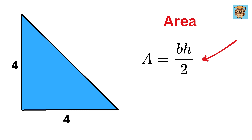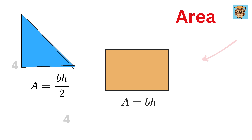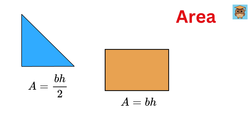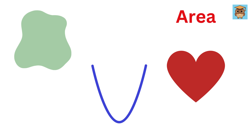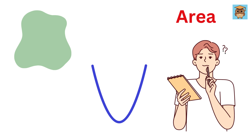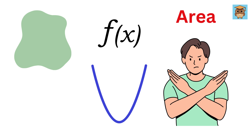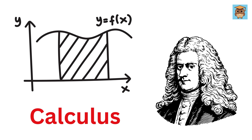Now, this simple formula is possible to derive for simple shapes with straight lines and clear boundaries, like triangles and rectangles. But what happens when the shape isn't so simple, like a curve? How do we calculate areas in those cases? We don't have a direct formula for those cases, and this is where calculus comes into the picture.